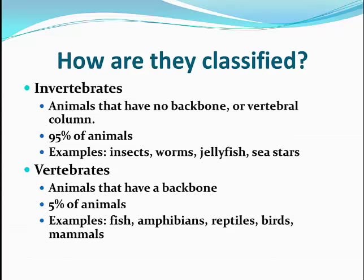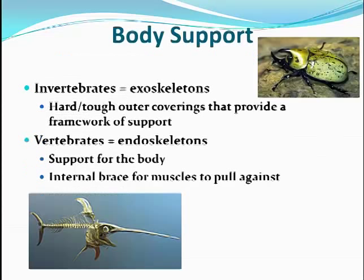So how are animals classified? There are two ways: invertebrates and vertebrates. Invertebrates are those that have no backbone or vertebral column — this is actually 95% of animals. Familiar examples include insects, worms, jellyfish, and sea stars. Our other category is vertebrates, which have a backbone. This is only 5% of animals, but probably the ones most familiar to you: fish, amphibians, reptiles, birds, mammals — basically the chordates.